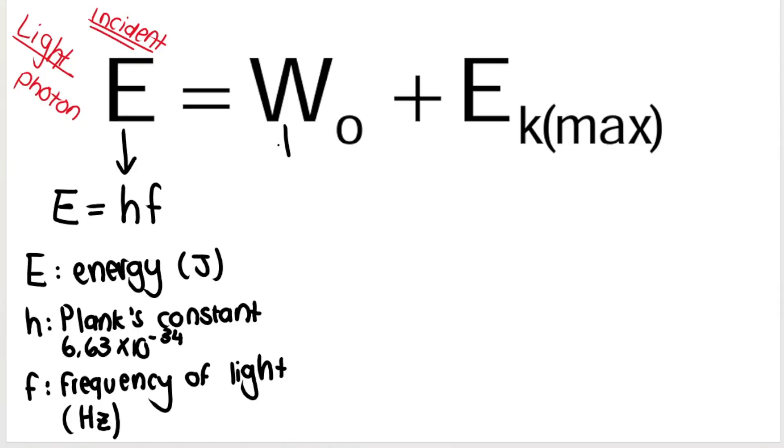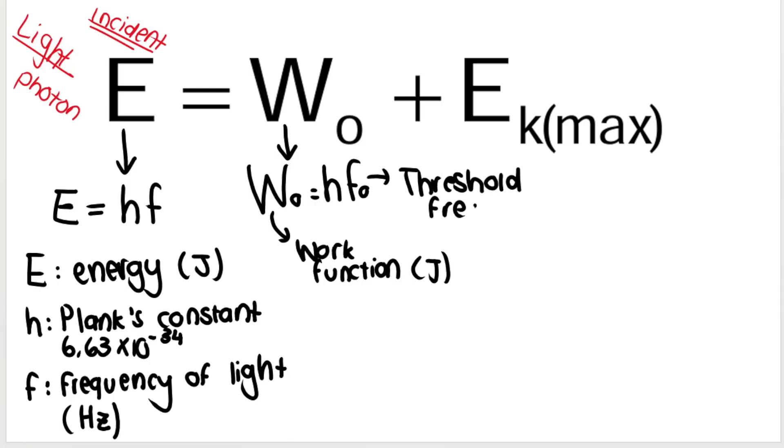Then we've got W₀, which is your work function, which we calculate by multiplying Planck's constant by threshold frequency. Work function belongs to the metal; it's measured in joules. F₀ is threshold frequency, which depends on the metal we're speaking about. Different metals have different threshold frequencies measured in Hertz.